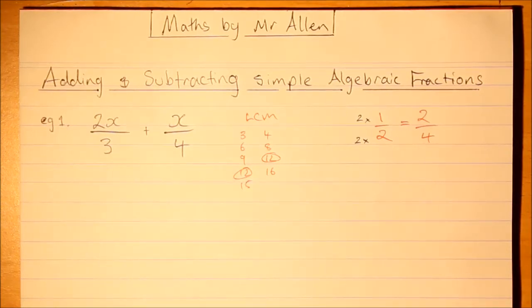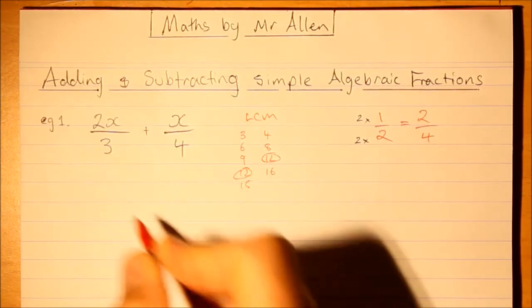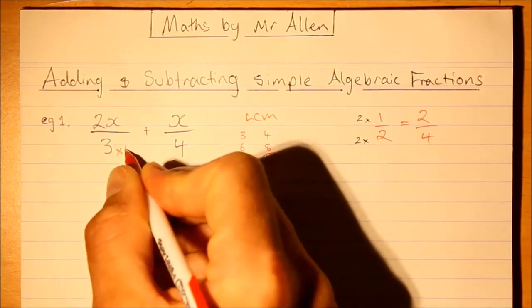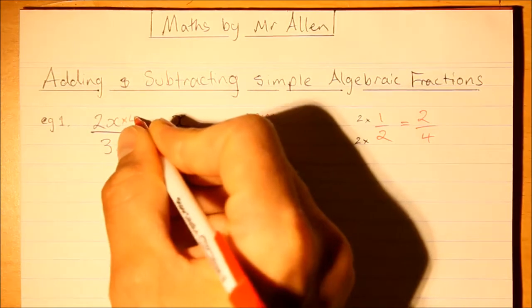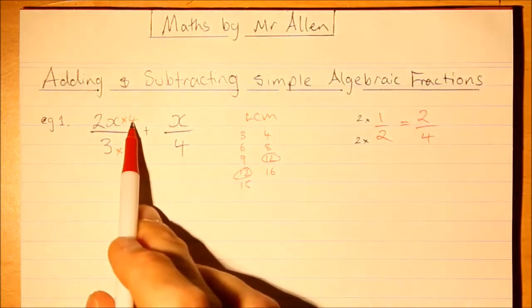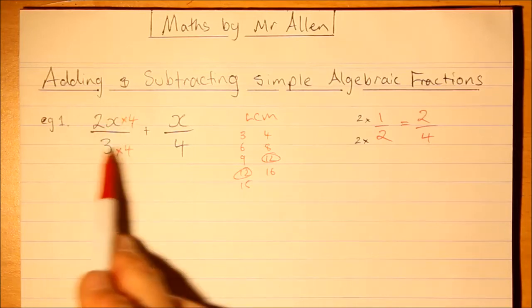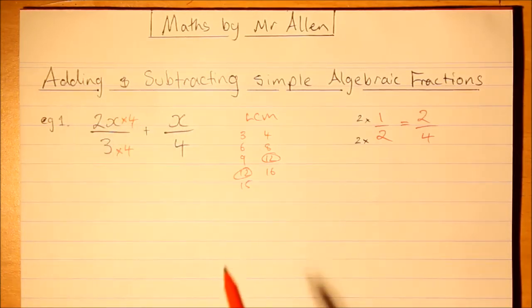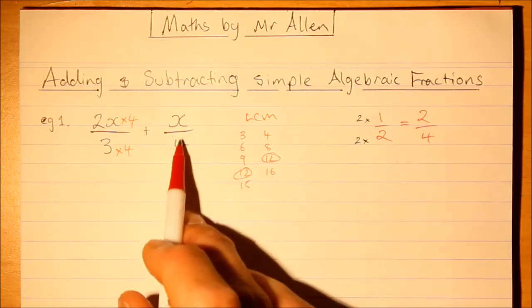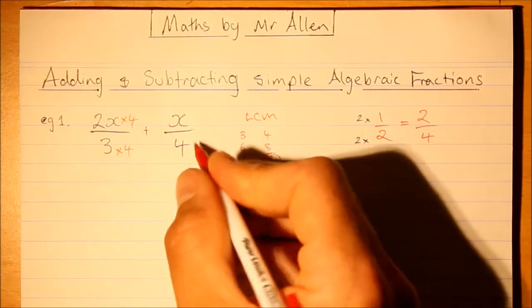How do we make our new equivalent fractions? You ask yourself: three multiplied by something equals twelve, that's the four. Whatever you do to the bottom, you do to the top. Four divided by four is one, so all we're doing really is multiplying this fraction by one, so we're not changing its value. If we look at this fraction over here, how do we get 12 from four? We multiply by three.